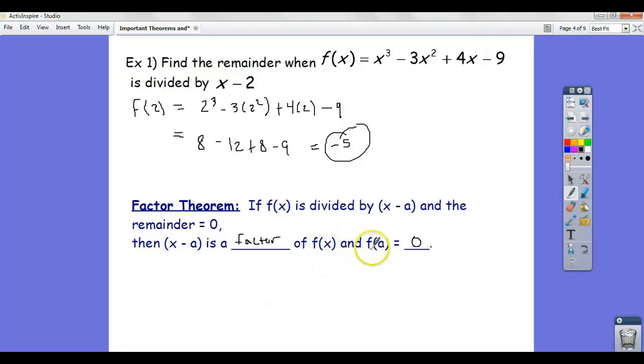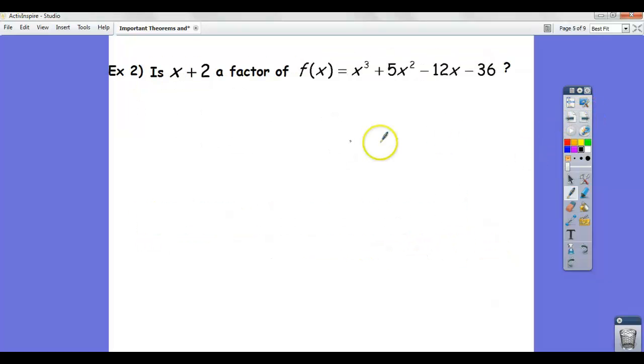and x minus a is a factor. So, straighten out that terminology, right? a is the zero of the polynomial, and x minus a is the factor of the polynomial associated with that zero. Let's do one other example.